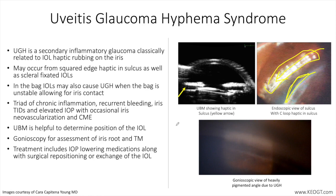With anterior chamber IOLs, remember that the proper size of the lens is obtained by using the horizontal corneal white-to-white distance and adding one millimeter. It is important to note that in-the-bag IOLs may also cause UGH syndrome when the bag is unstable, allowing for contact with adjacent tissues.